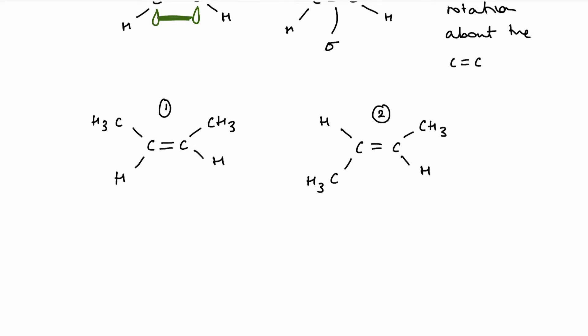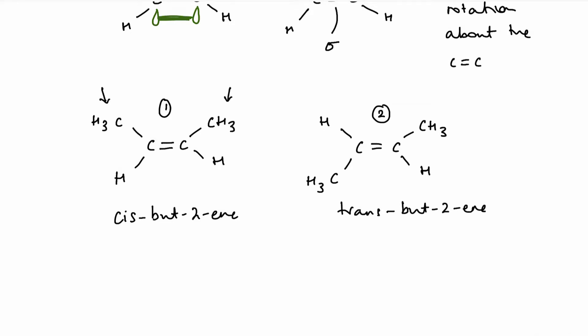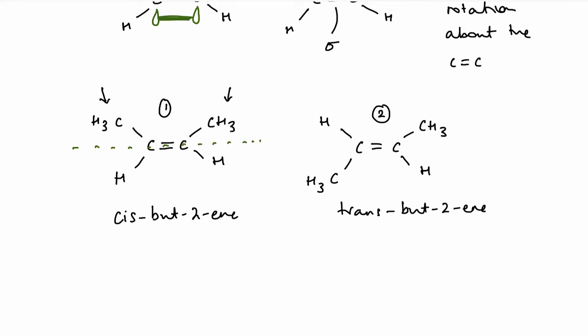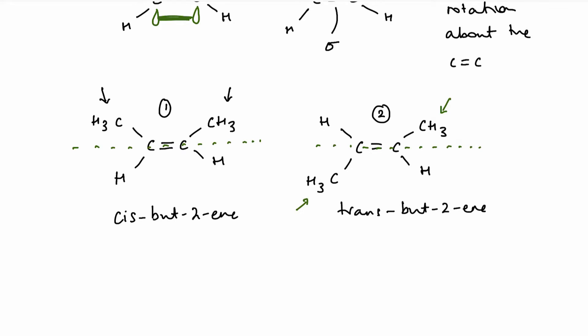As a result, these stereo isomers have slightly different physical properties and sometimes different chemical properties. In the basic system, we use cis and trans: this would be cis-bute-2-ene and this one trans-bute-2-ene. Cis means the two methyl groups are on the same side of the carbon-carbon double bond, and with the trans isomer the methyl groups are diagonal — opposite each other.